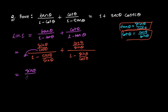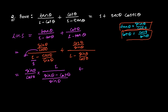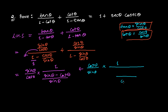It will be sine theta over cos theta times... If you look at the denominator: where there is nothing, there is 1. We take the LCM of 1 and sine theta, giving sine theta. Then 1 divides sine theta giving sine theta, and sine theta divides sine theta giving 1, which divides cos theta. So the first fraction simplifies to sine squared theta over cos theta times sine theta minus cos theta, and similarly the second becomes cos squared theta over sine theta times cos theta minus sine theta.